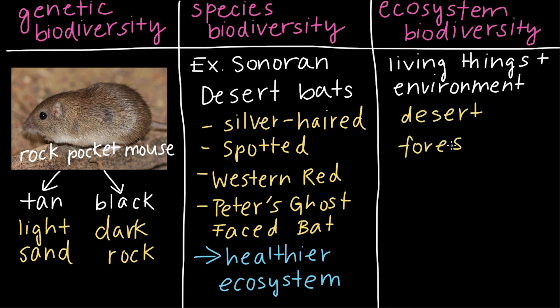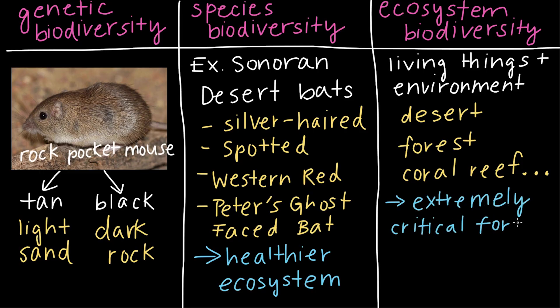And in addition to desert ecosystems, Earth has forest ecosystems, coral reef ecosystems, all kinds of different ecosystems. And having all these different kinds of ecosystems is extremely critical for our survival, because the diversity of ecosystems on Earth provide us humans with important resources and services. So without ecosystem biodiversity, our quality of life and, in fact, our very survival could be at risk. So as you can tell, every level of biodiversity is incredibly important for unique reasons.